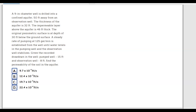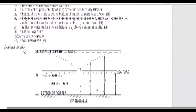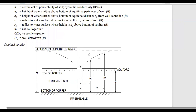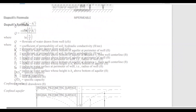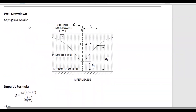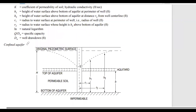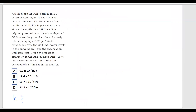Again we're asked to calculate permeability k. I suggest we look in the FE Handbook for a confined aquifer. If you search for 'confined aquifer,' it gets you to a page showing both an unconfined and confined aquifer diagram. Our problem involves a confined aquifer, so let's sketch the problem.